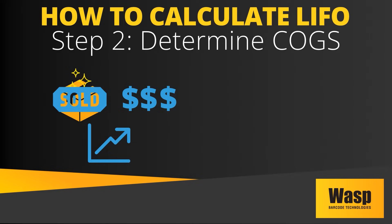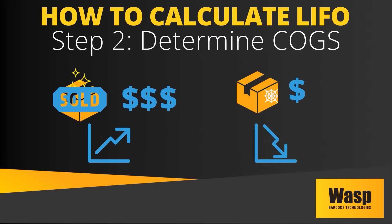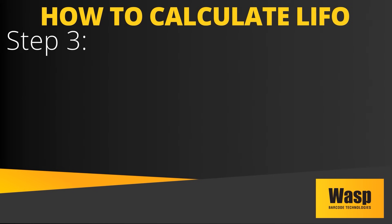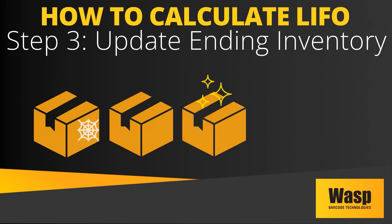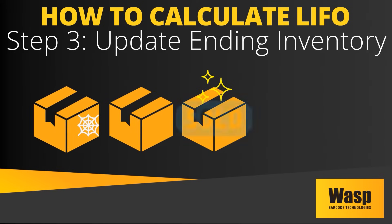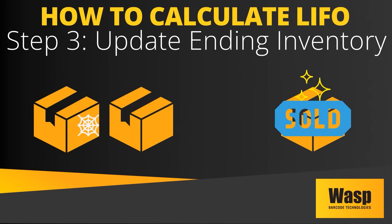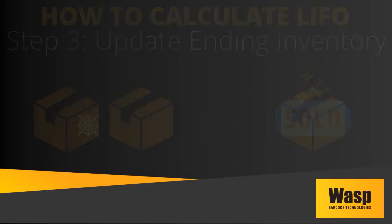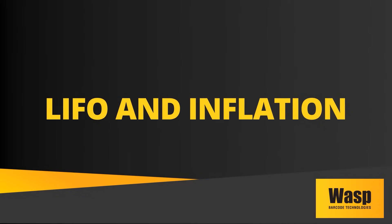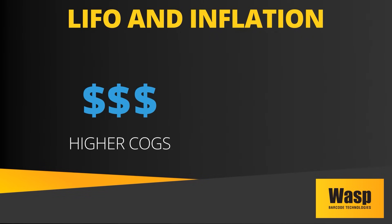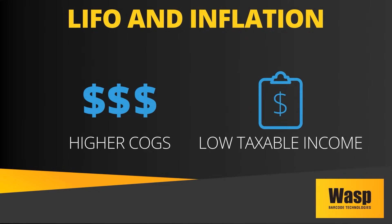Consequently, the remaining inventory values will reflect older, lower costs, impacting asset valuation on the balance sheet. Step 3: Update the ending inventory. Deduct the sold inventory from the most recent lot before moving to earlier layers. In an inflationary environment, using LIFO results in higher cost of goods sold, but also holds less current inventory value and thus a lower taxable income than FIFO inventory valuation, influencing net profits and cash flow.